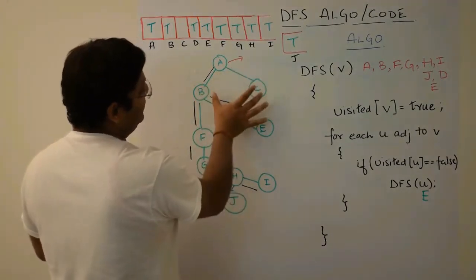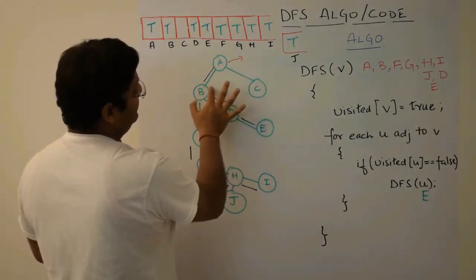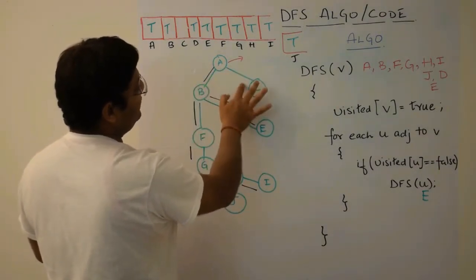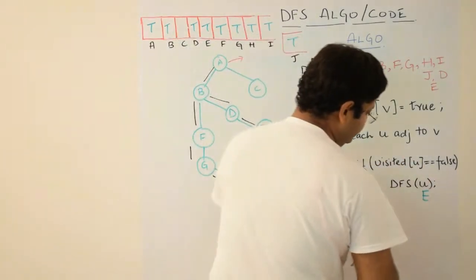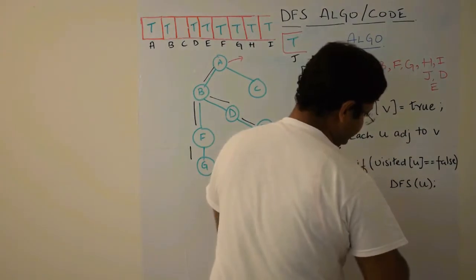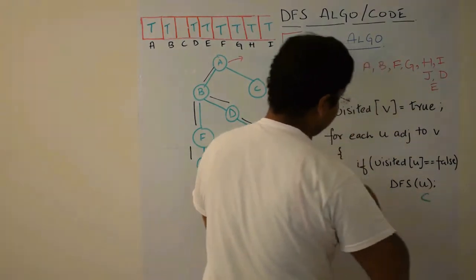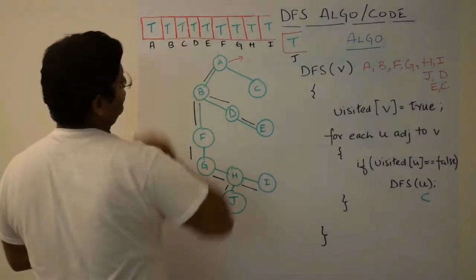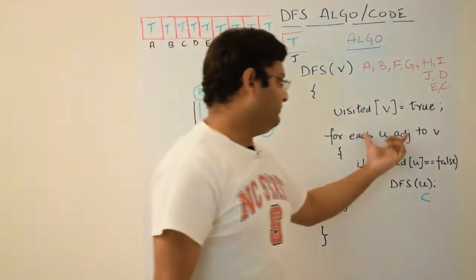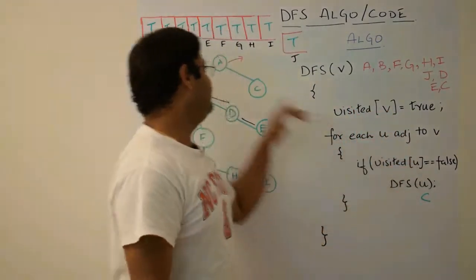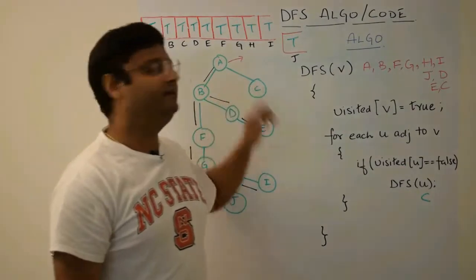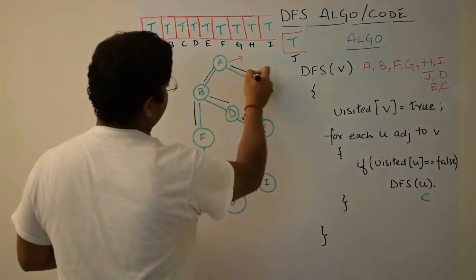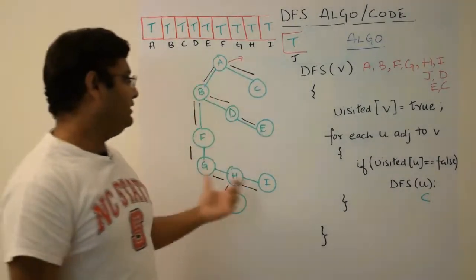Now as you remember we had two neighbours of A, B and C. But we chose to go through B. Now C is neighbour of A which has not been visited. So we will pass C. And we will pass C here. C is passed here. And now C is true. So C will come here. Any neighbour of C which has not been visited? There is only one neighbour. It has already been visited. Nothing to do. So we have gone to C also and completed our whole logic.